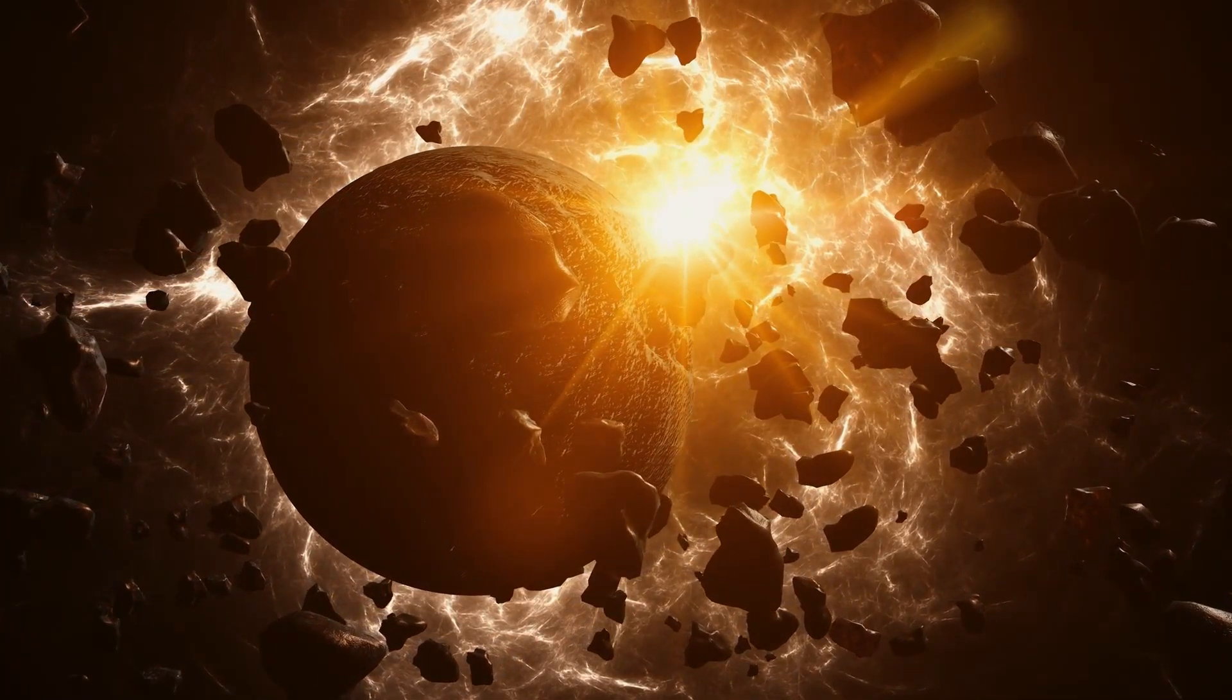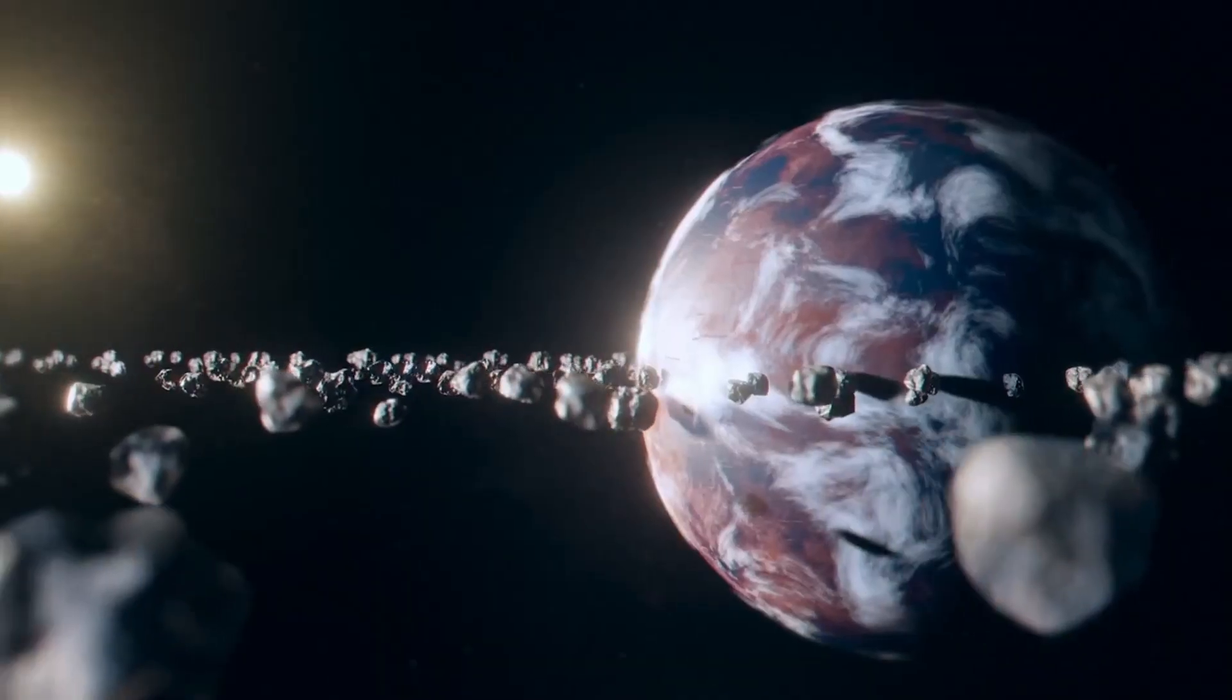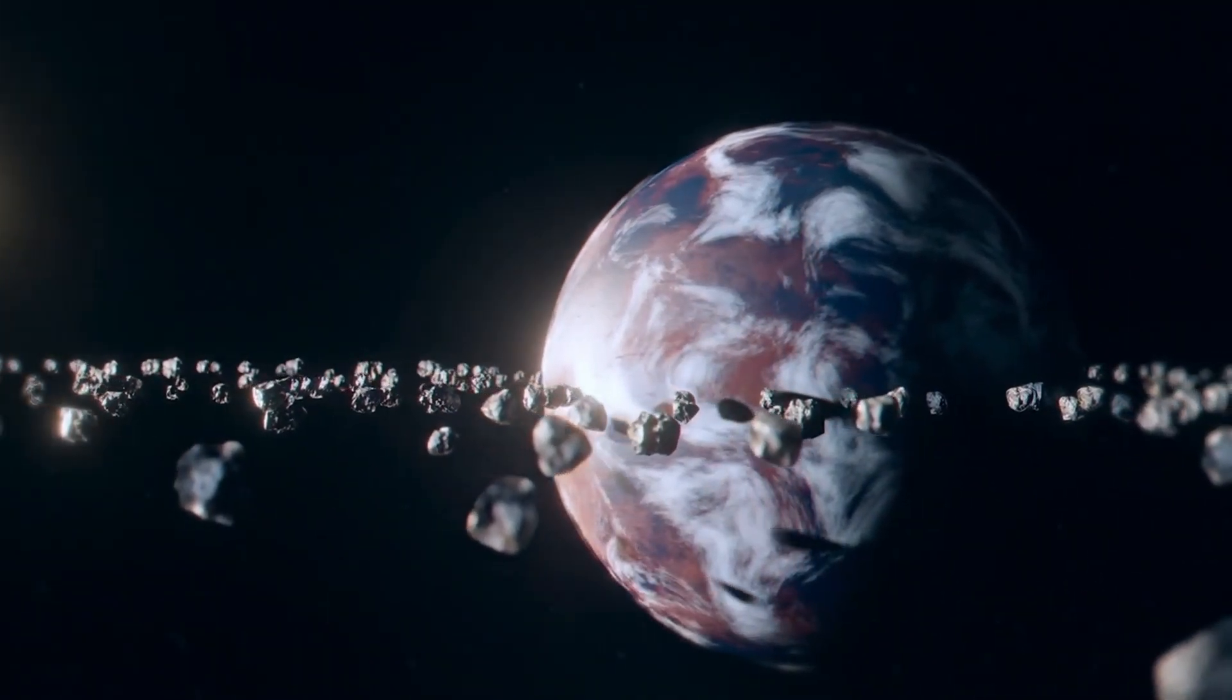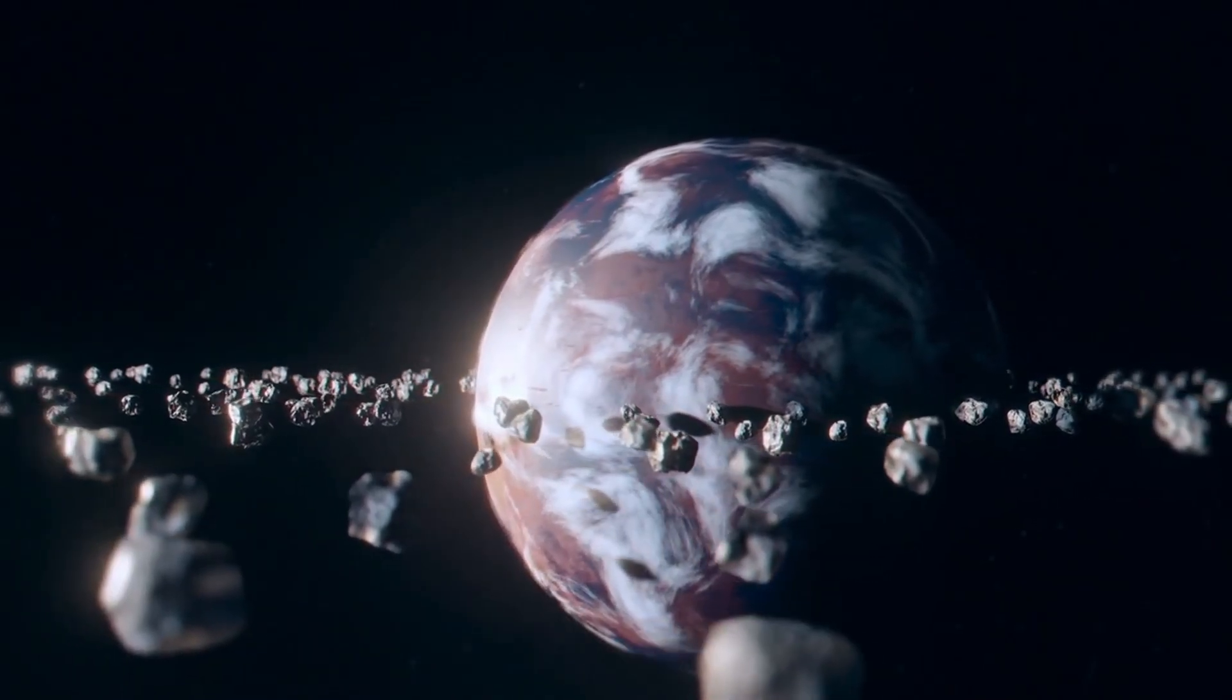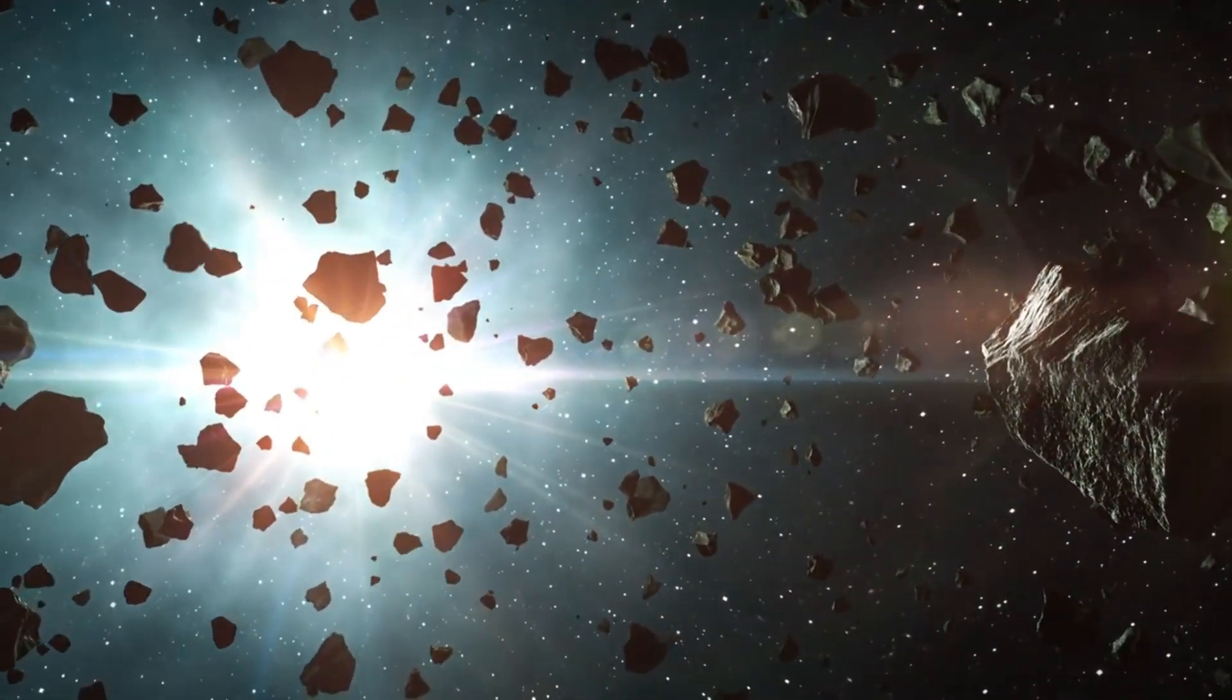Pluto's path around the Sun is extraordinary, largely because of the unique features of its orbit. It takes a staggering 248 years for Pluto to complete one orbit around the Sun. Since its discovery in 1930, Pluto has not yet finished a full orbit.